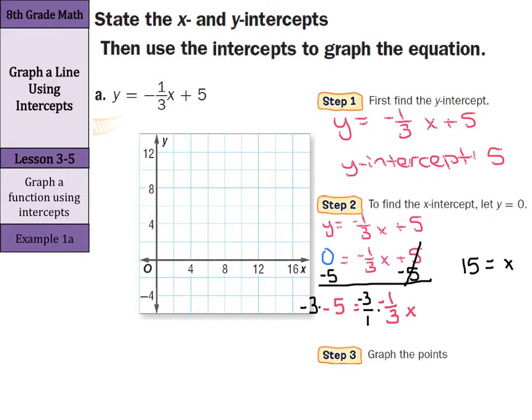So our x-intercept is where y equals 0, which is the point (15, 0). Because remember, our ordered pairs are in x, y form. So our y-intercept is 5, so we can go up to 5.